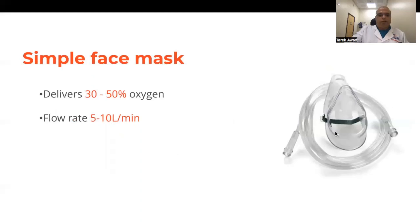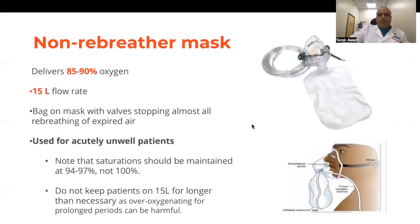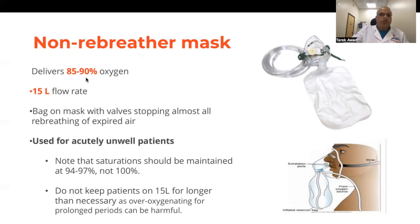If saturation is less than 92%, more advanced devices are needed. The simple face mask can deliver 30 to 50% oxygen at flow rates of 5 to 10 liters per minute. The non-rebreather mask — widely used during the COVID era — can deliver up to 90% oxygen at a flow rate of about 15 liters per minute. The bag and mask have a one-way valve that prevents exhaled air from mixing with the incoming oxygen, so the patient receives a high concentration of oxygen. This mask is used for patients with severe hypoxia who can tolerate a non-invasive approach.